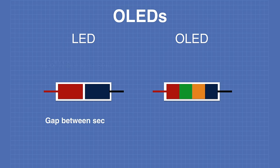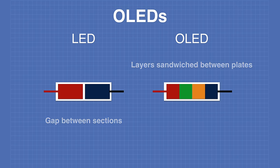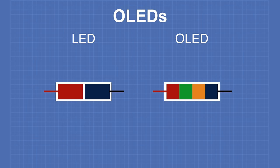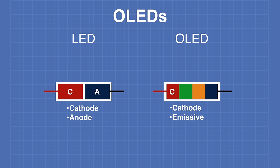In an LED there is a gap between the two sections of semiconductor material. In an OLED the different layers are sandwiched together between plates. The components of an LED are the cathode and the anode material. The layers of an OLED are: first the cathode, then the emissive layer, then the conductive layer, and then the anode. These layers are sealed between the top layer called the seal and the bottom layer called the substrate.